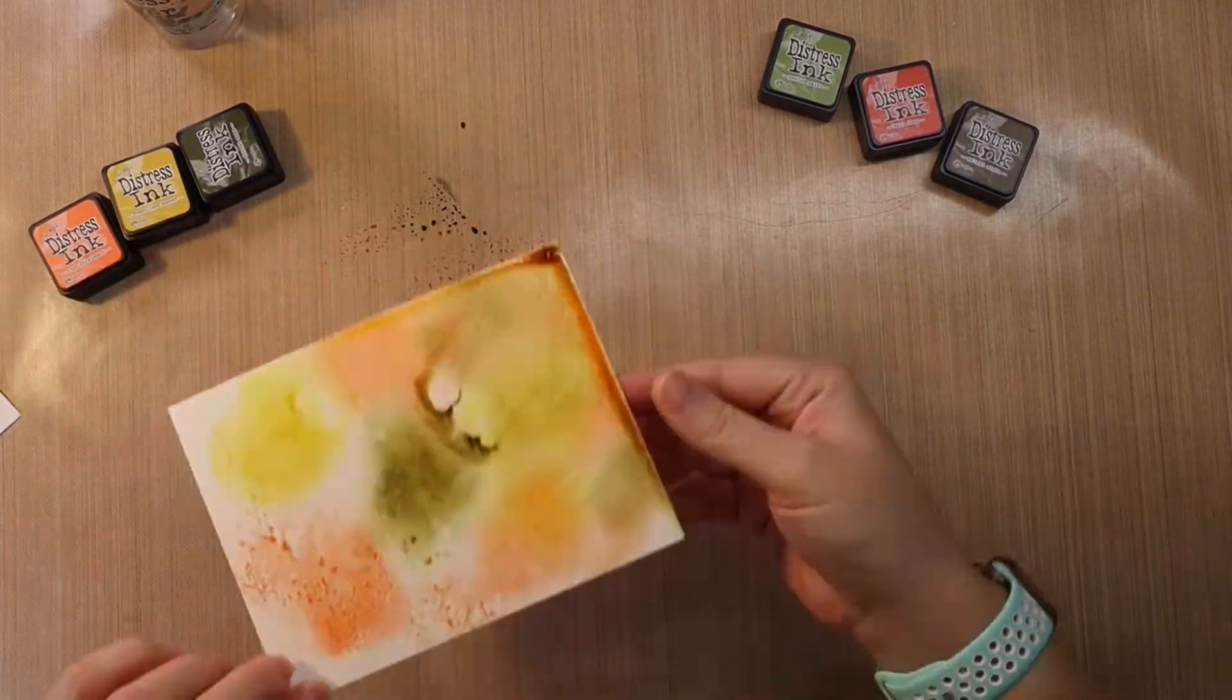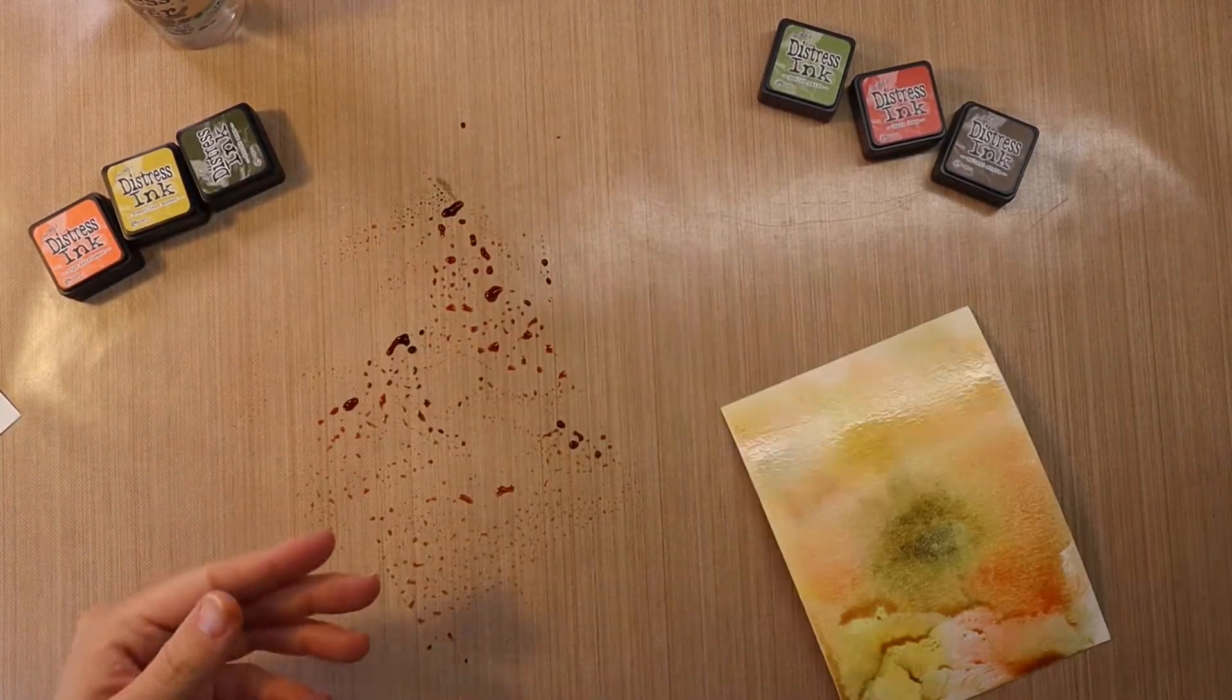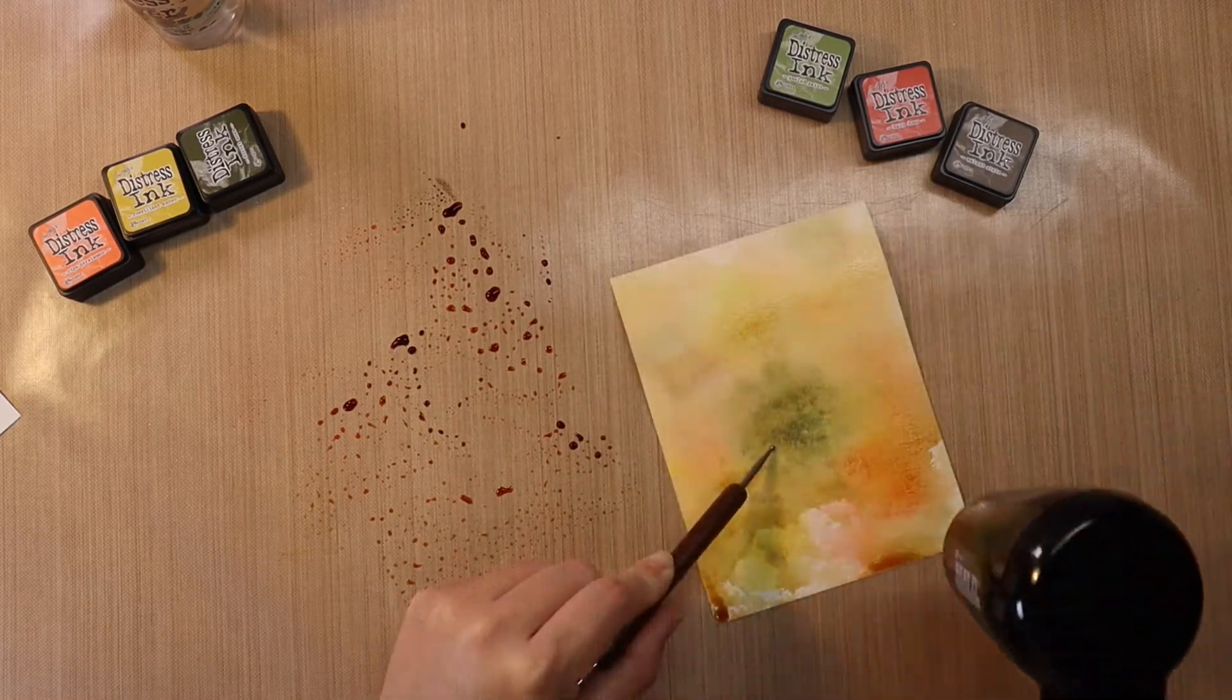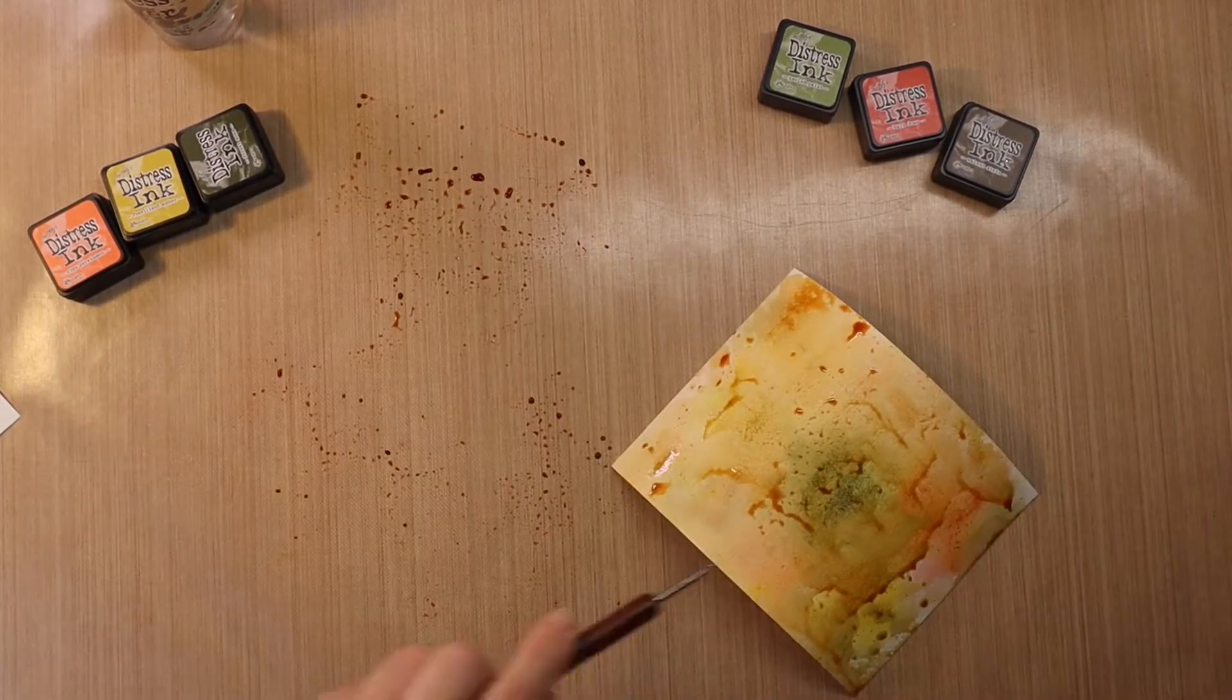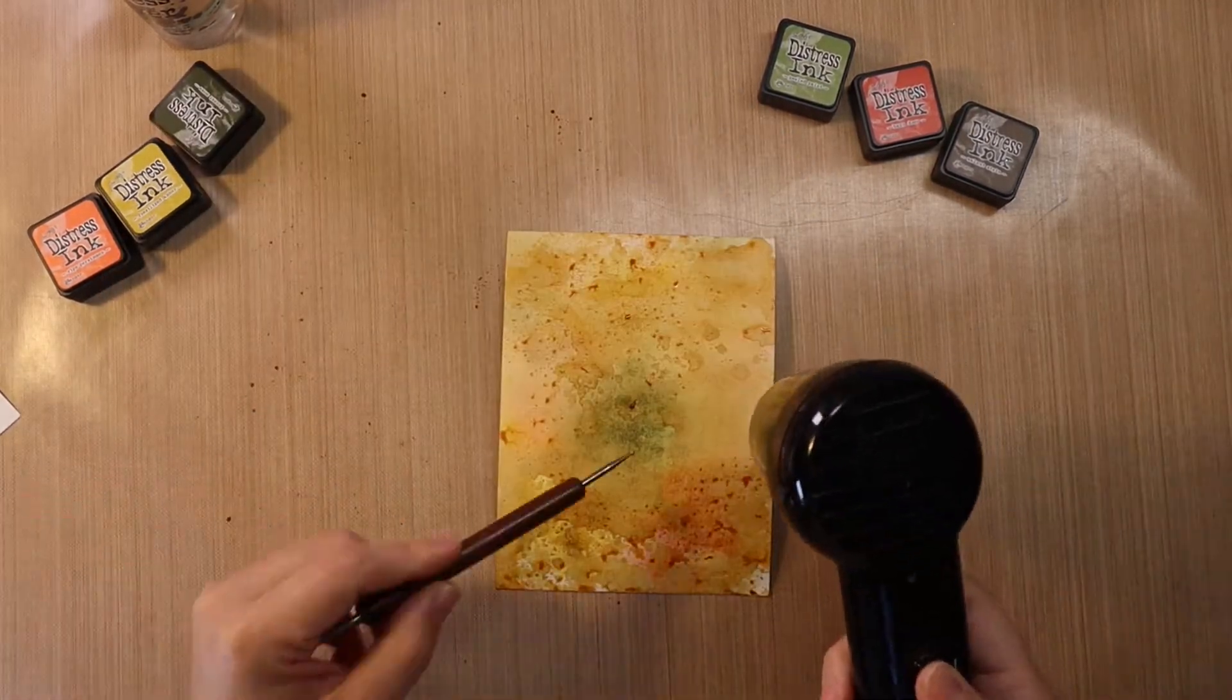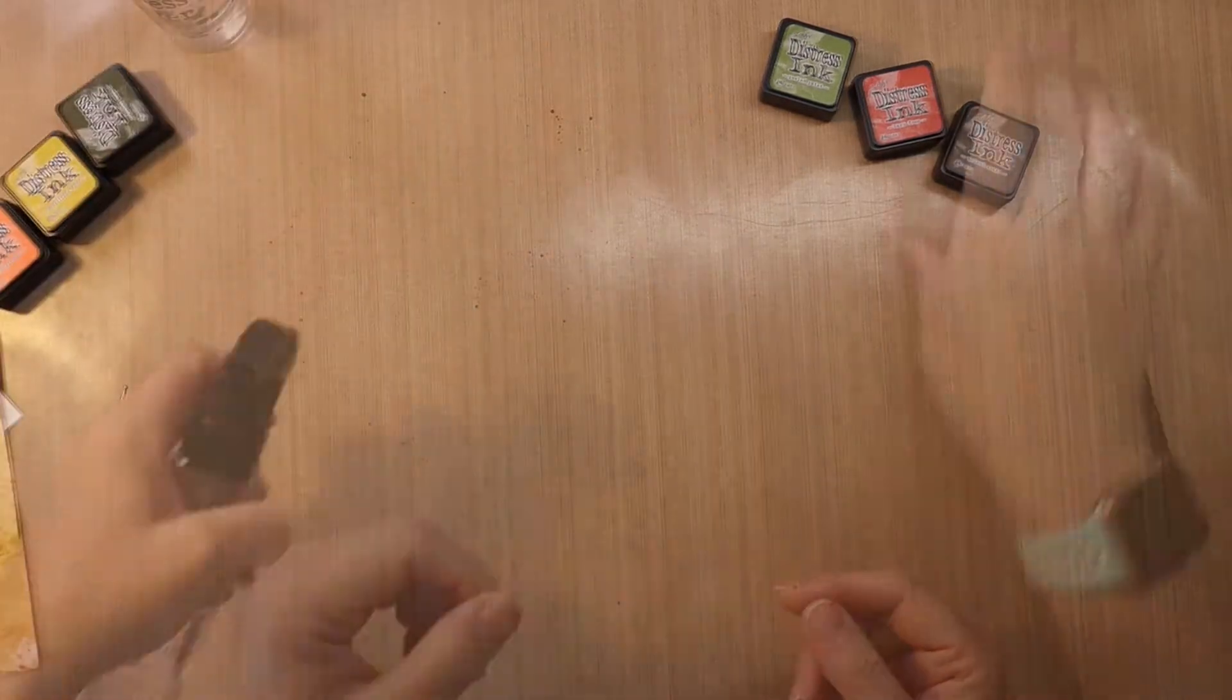Now, this is the trick to getting great results with ink smooshing. Dry, get some color on, dry your panel, either let it air dry or use a heat tool, something to dry the panel. Then go back into your ink, get a few more layers on, dry the panel again, and these multiple layers is what gives you the really great results. A lot of dimension, a lot of interest.